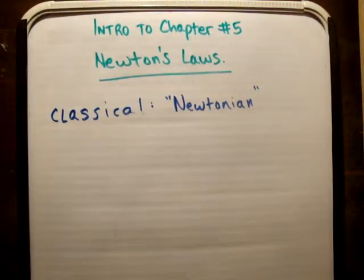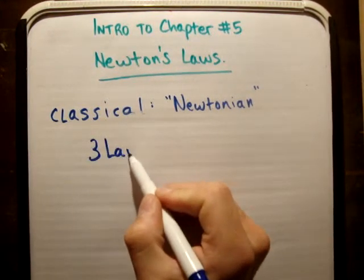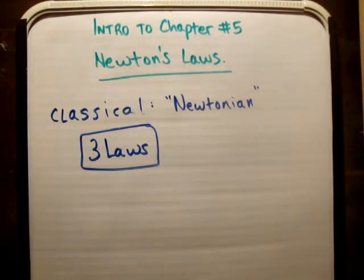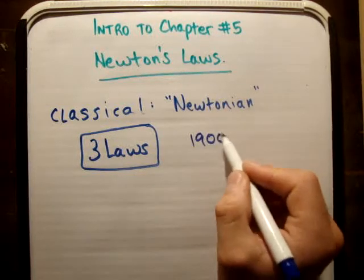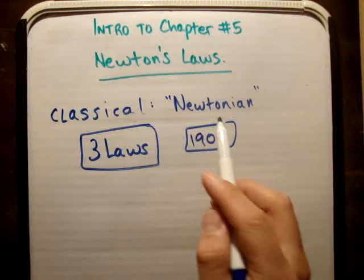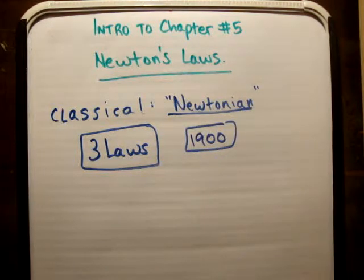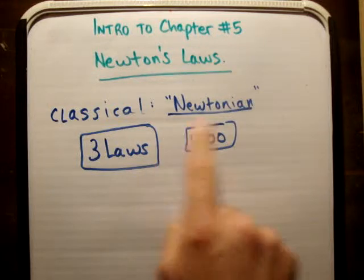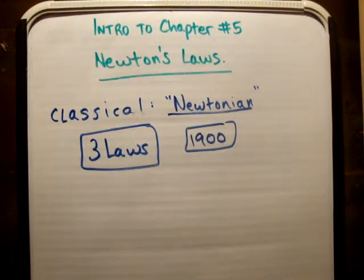What Newton did was he came up with three laws, which I won't discuss now. But these are the three laws which essentially governed classical physics. They were thought to be empirical, or what that means is, they were thought to be, well, you couldn't prove them. But nothing violated these three laws. However, after 1900, we found that we were violating the laws of Newtonian physics. His physics was so good that the things you're about to learn in this chapter were the physics used for hundreds of years.